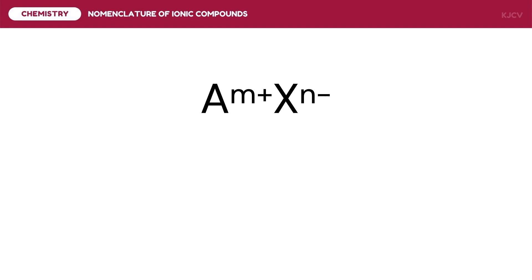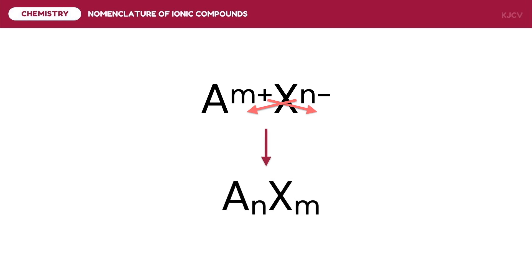To write the chemical formula of an ionic compound, we do a criss-cross of charges. This means that the charge of the cation will be the subscript of the anion, and the charge of the anion will be the subscript of the cation. As the charges become the subscripts of each other, the signs are removed. The subscripts indicate the number of atoms an element has in a substance.